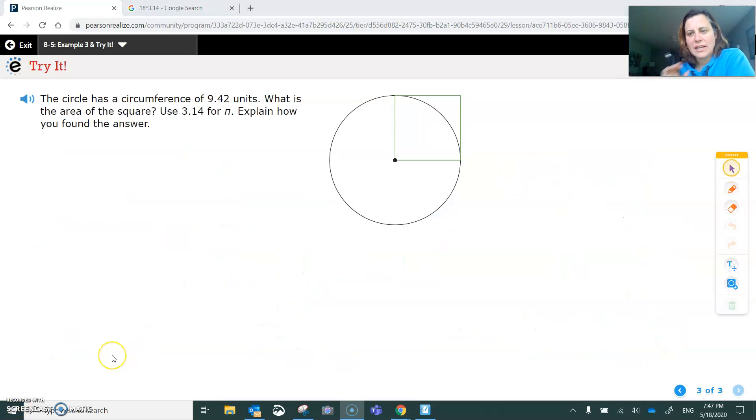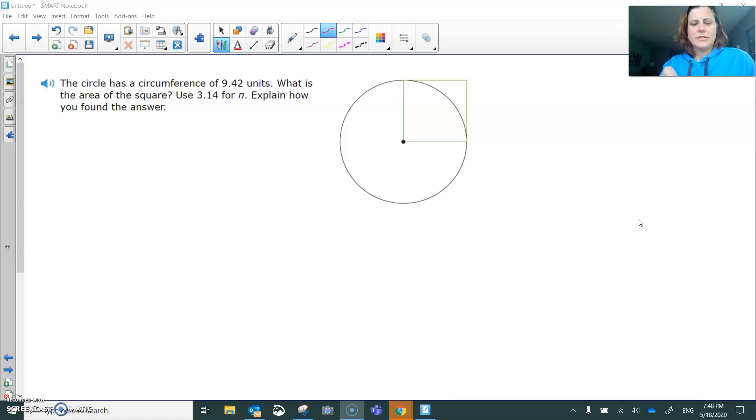This is the example 3 triad. If you came to my team's meeting last week, we actually did this one together. In this problem, we have this square, and they want us to use 3.14 for π. So having a circumference of 9.42 means that 9.42 goes around the entire circle. So if the formula is circumference equals, let's do 2πr.